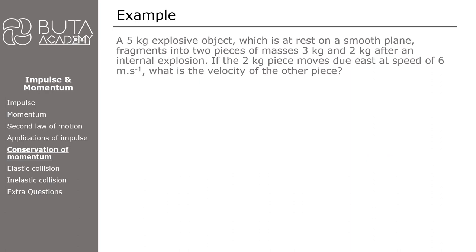Let's solve an example to see how to use the given formula. A 5 kg explosive object, which is at rest on a smooth plane, fragments into two pieces of masses 3 kg and 2 kg after an internal explosion. If the 2 kg piece moves due east at a speed of 6 m per second, what is the velocity of the other piece?